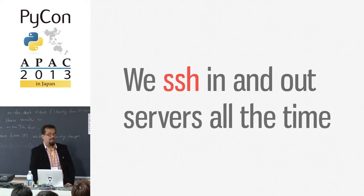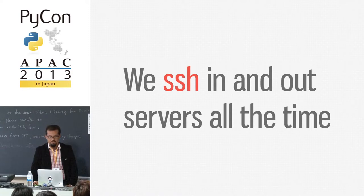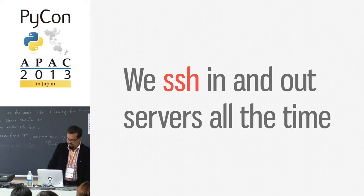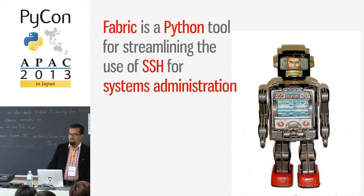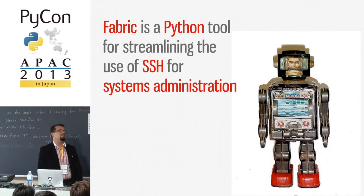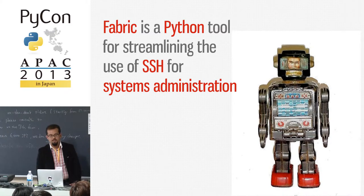I have also found that we SSH in and out of servers all the time for diagnosis or deployments, and sometimes we have to get custom information from databases, so SSH is a very important part of our lives. Fabric is a Python tool that streamlines the use of SSH for systems administration, so instead of SSHing manually into computers, we can send our robot minions to do it.